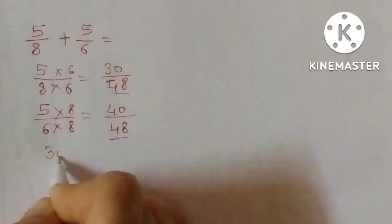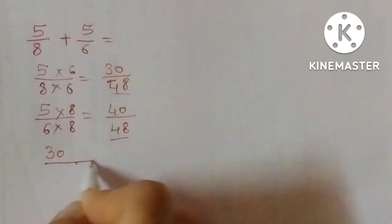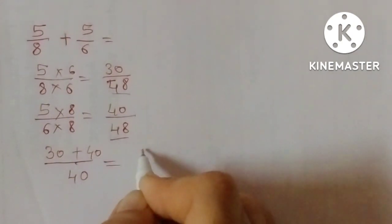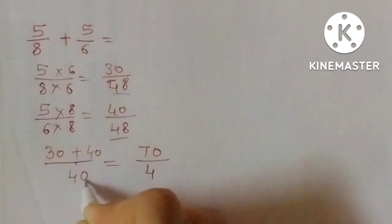30 plus 40 upon 48. 30 plus 40 equals 70 upon 48.